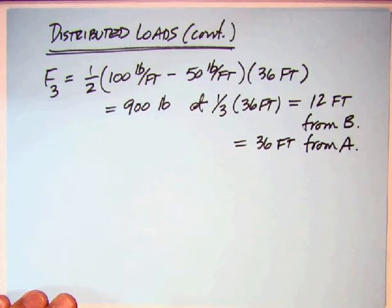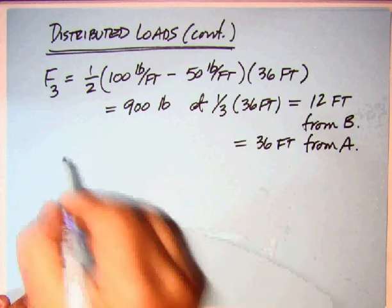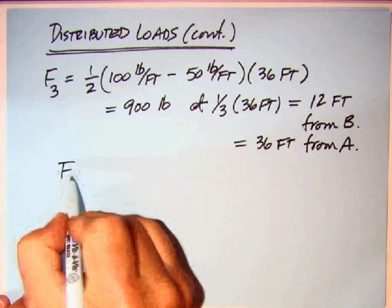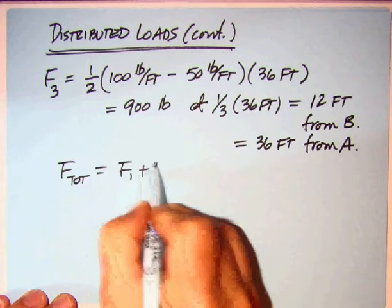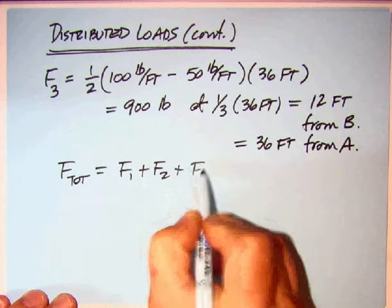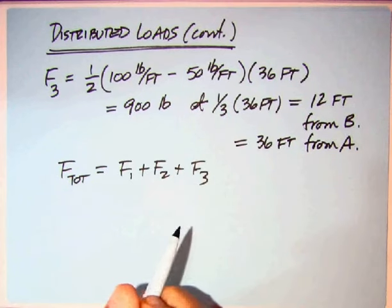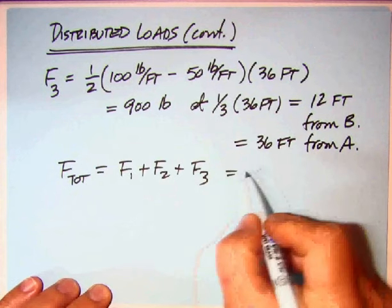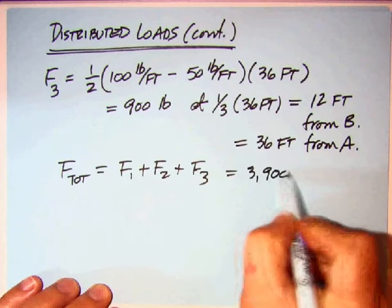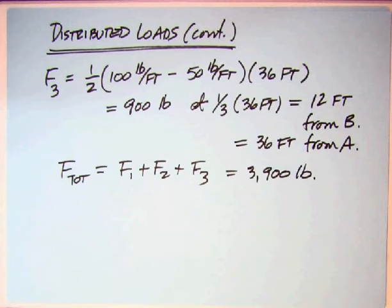Now if we look at the total, I can't do a total location. But F total, which is equal to F1 plus F2 plus F3. If you add up all of those, you're going to end up with 3900 pounds, which is what the author got as a total. But we have a different location. He still has 1200, but I've got 1800 and 900.